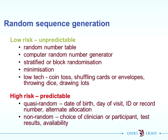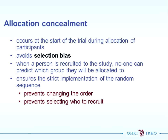Low risk for random sequence generation would include a random number table, computer random number generator, minimisation, stratified or block randomisation, or low-tech options like coin tossing or shuffling cards. High risk of bias is quasi-random - for example, date of birth, date of visit, or ID record - which is insufficient randomisation. Non-random practice is also obviously not randomised sequence generation.